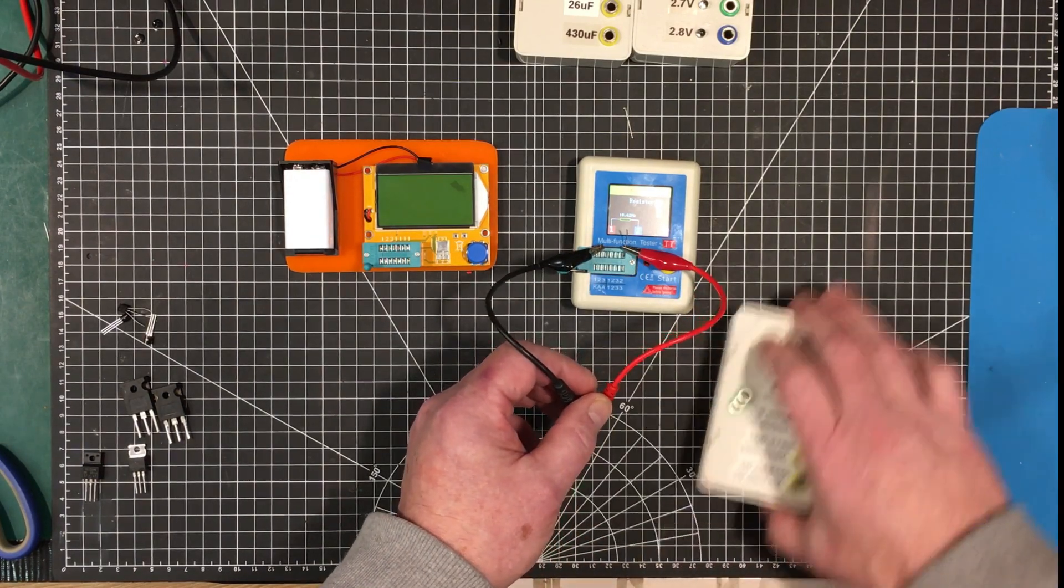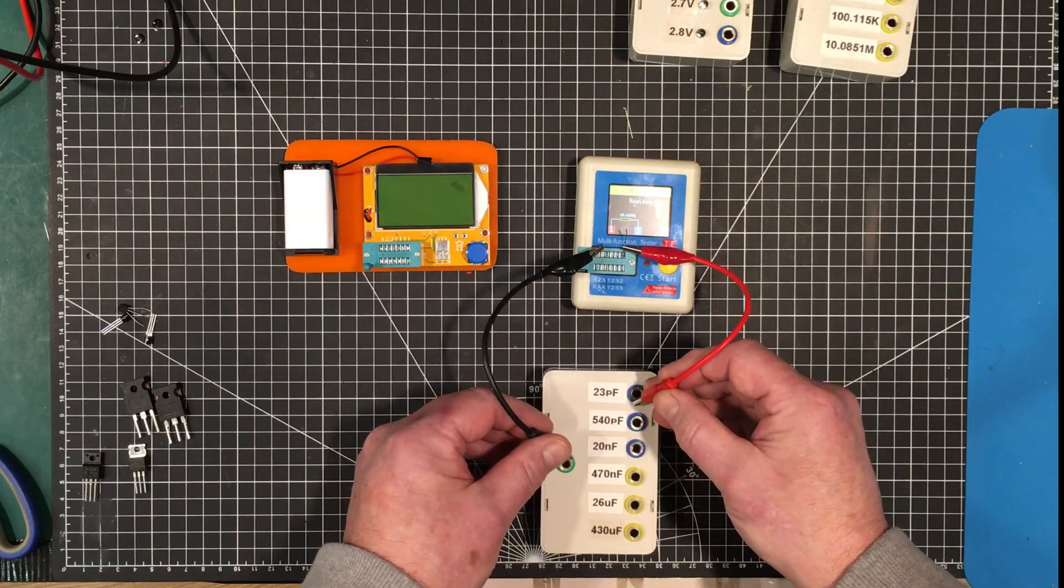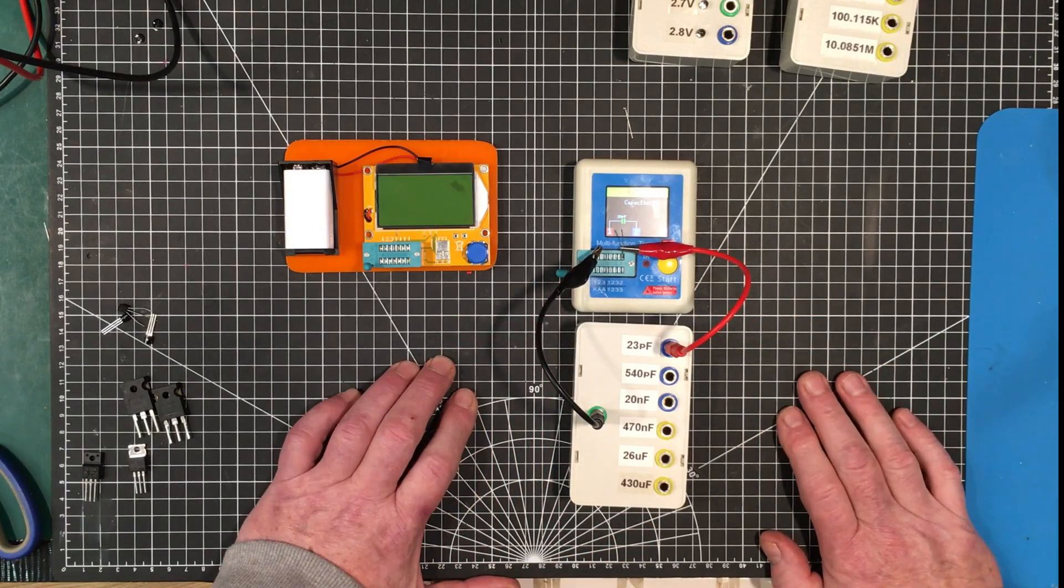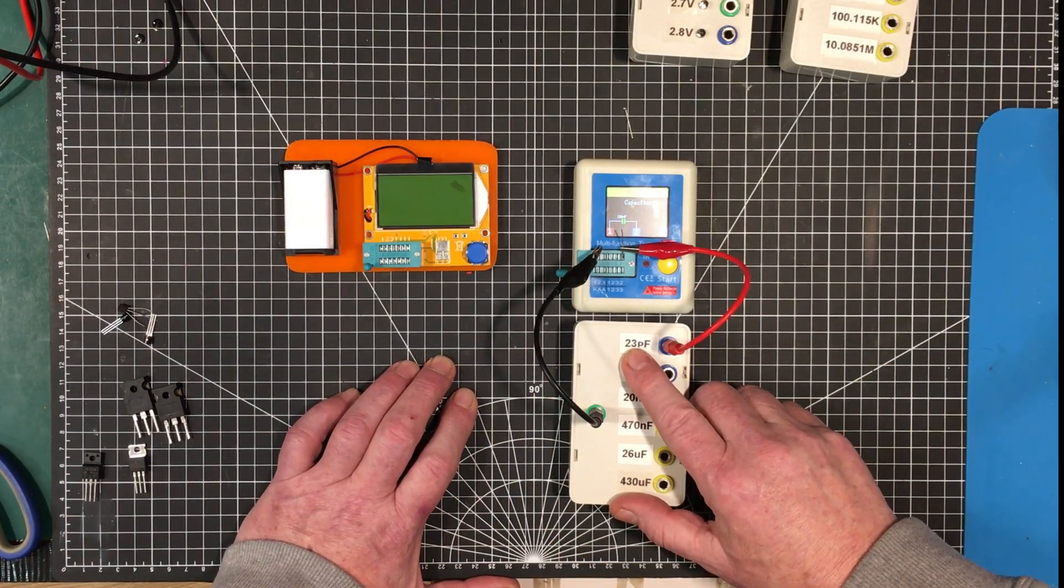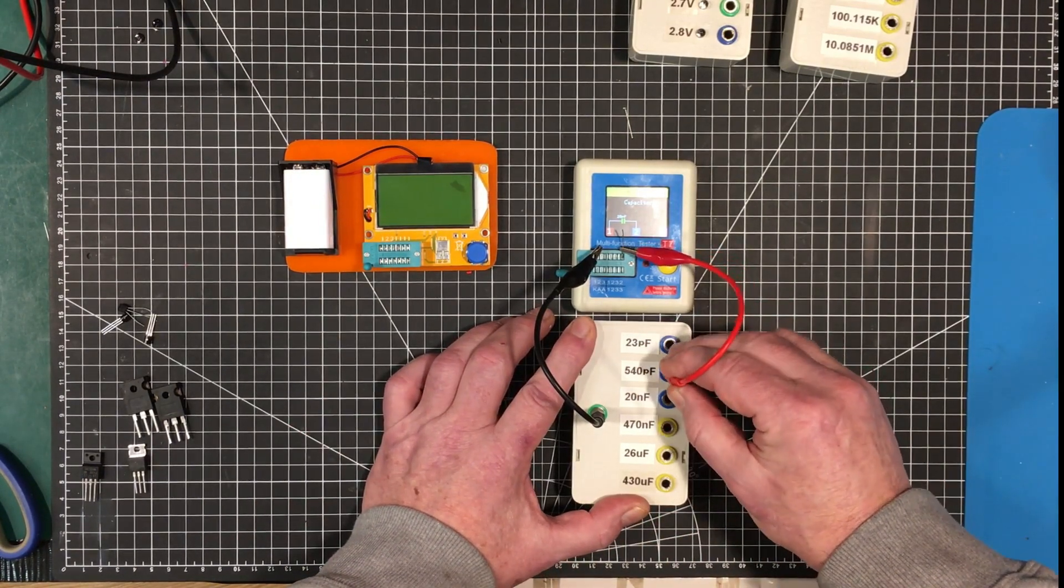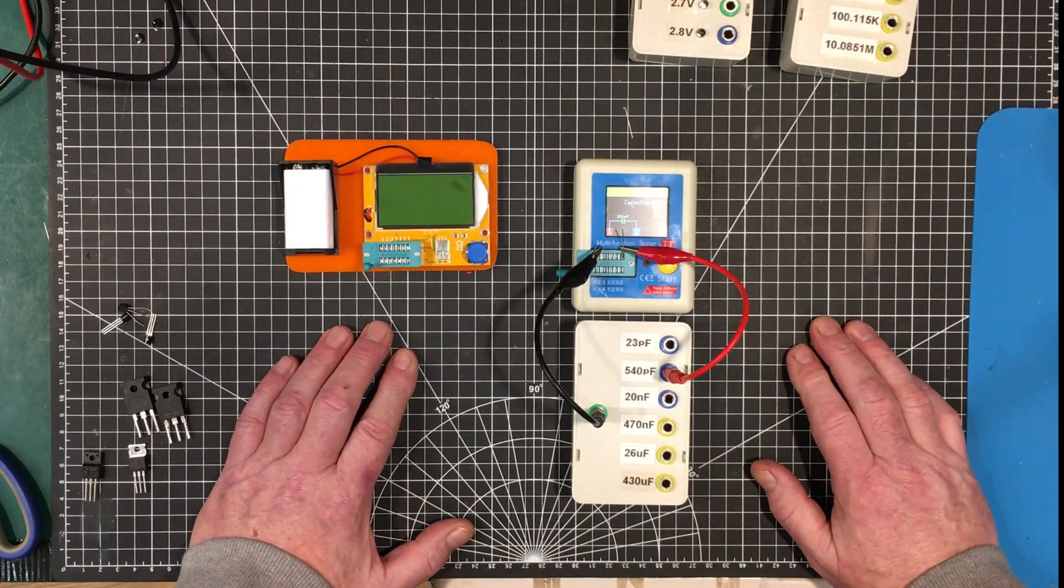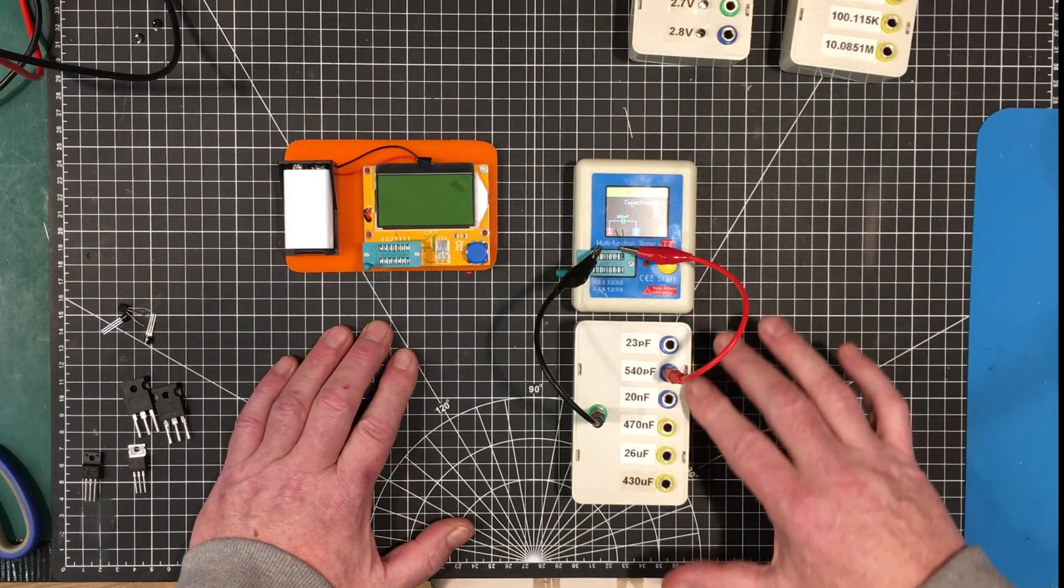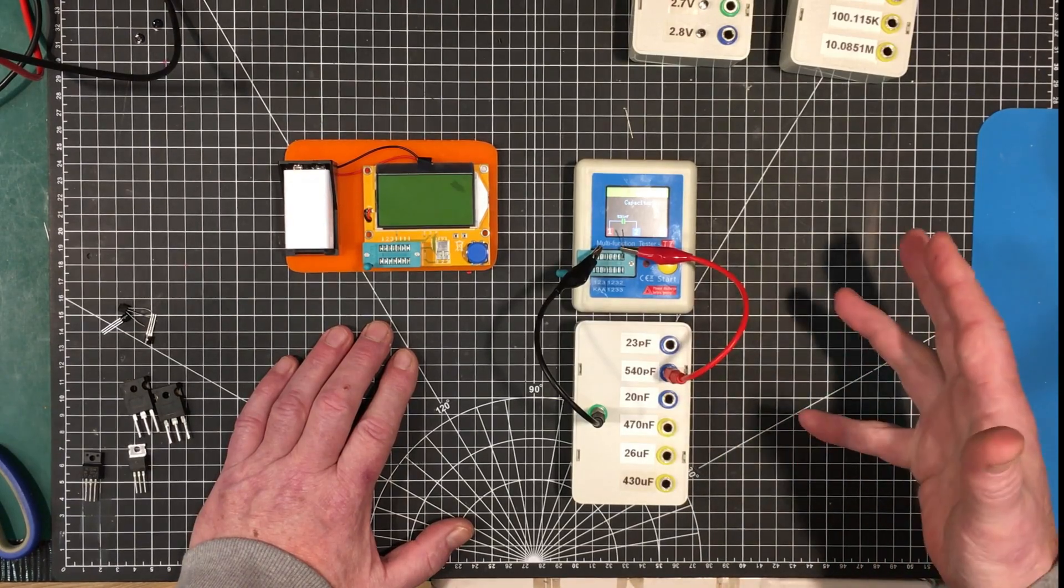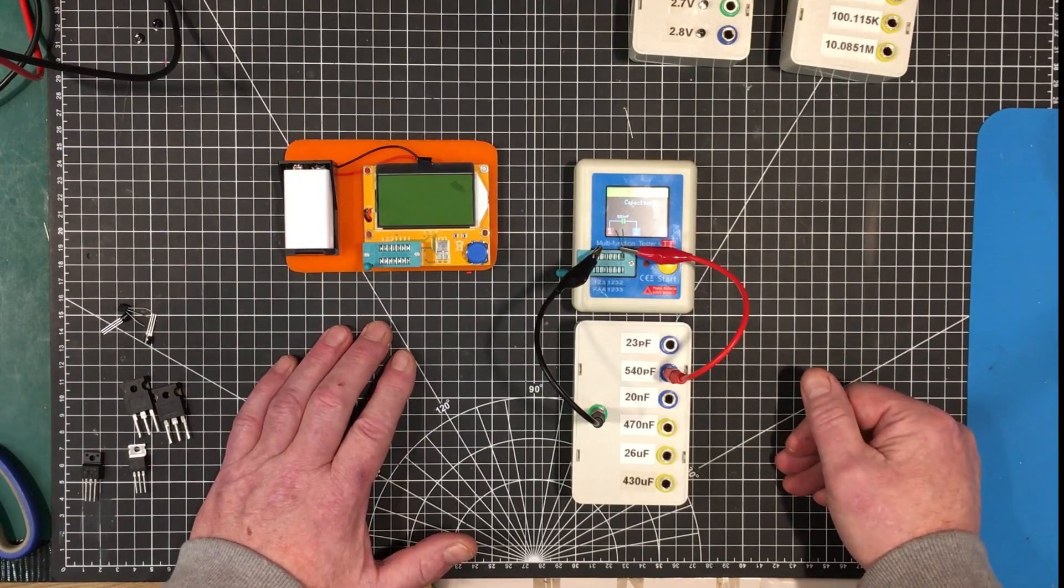Now let's switch over to capacitors here. See how it does on those. I imagine it's not going to be as close. 28 picofarads, so it's 5 picofarads out. It's about 20%. Now capacitors are tough to check. The capacitance can depend, especially on ceramic capacitors which these first three are. It can depend on the voltage applied across them, the frequency that they're being looked at and all that sort of things enter into how well a capacitor will measure.